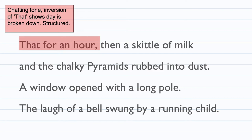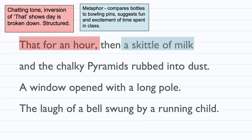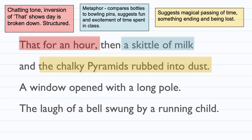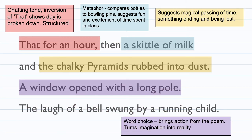The next part we're going to highlight is 'a skittle of milk' — this is a metaphor comparing the bottles to bowling pins, suggesting fun and excitement of time spent in class; the children enjoy being there, just like in a bowling alley. 'Chalky pyramids rubbed into dust' suggests a magical passing of time, something ending and being lost, like a story of a faraway place. 'A window opened with a long pole' is word choice that brings action and turns imagination into reality, bringing them back to the present.